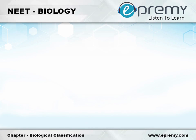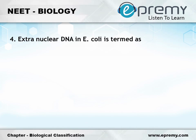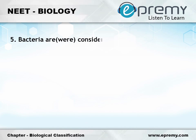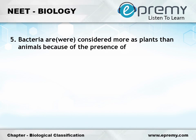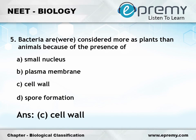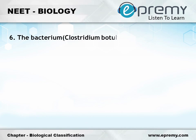Question number 4: Extra nuclear DNA in E. coli is termed as — Option A: F plus factor; Option B: sex factor; Option C: episome; Option D: all of these. The answer is Option D, all of these. Question number 5: Bacteria are considered more as plants than animals because of the presence of — Option A: small nucleus; Option B: plasma membrane; Option C: cell wall; Option D: spore formation. The answer is Option C, cell wall.